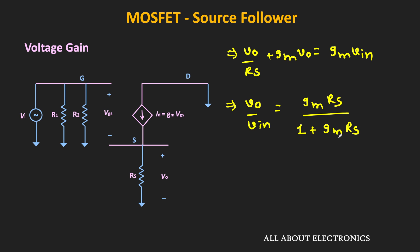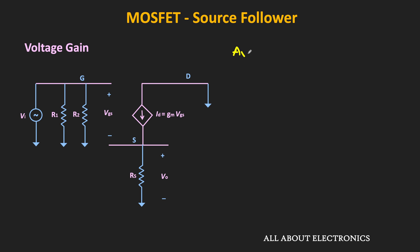If you observe, the denominator is always greater than the numerator, meaning the voltage gain Vout divided by Vin is always less than 1. If Gm·Rs is much greater than 1, then the voltage gain is approximately equal to 1. Moreover, the voltage gain is positive, meaning in this source follower, the output and input signal will be in the same phase. The same expression can also be written as: voltage gain equals Rs divided by (1/Gm plus Rs). This tells us that the voltage gain is the total resistance seen between the source and ground terminal divided by that resistance plus 1/Gm.